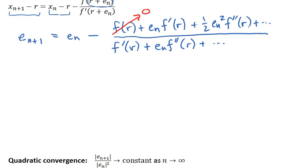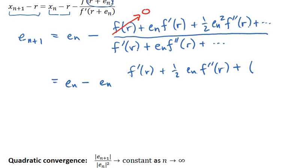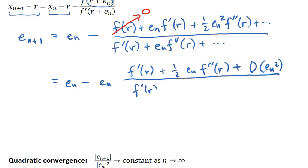So if we do that, we get e_n here minus e_n. So f'(r) plus one-half e_n f''(r) — the next term would be on the order of e_n squared. In the original series it was e_n cubed, but I factored e_n out of that whole numerator. And then the denominator is f'(r) plus e_n f''(r) plus the next term, which would also be order e_n squared.